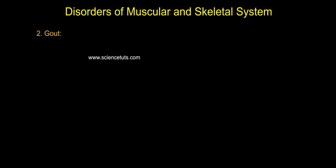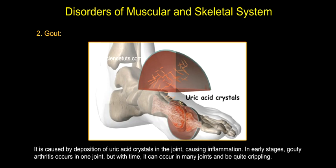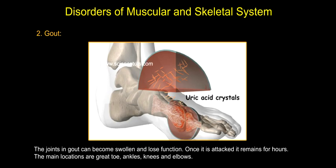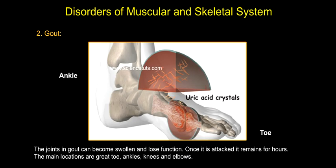Gout is caused by deposition of uric acid crystals in the joint, causing inflammation. In early stages, gouty arthritis occurs in one joint, but with time it can occur in many joints and be quite crippling. The joints in gout can become swollen and lose function. Once attacked, it remains for hours. The main locations are the great toe, ankles, knees, and elbows.